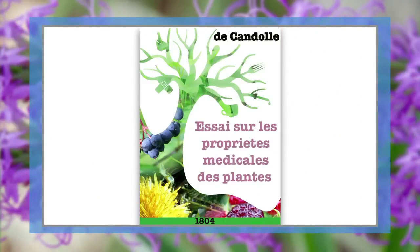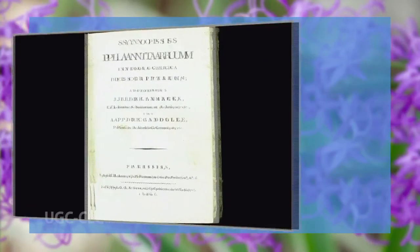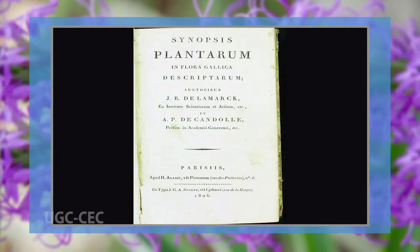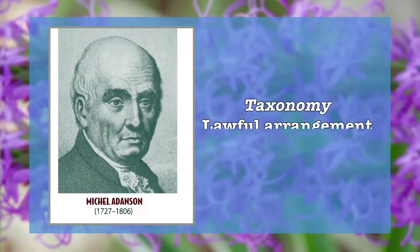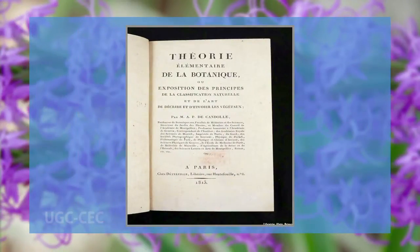In 1804, De Candolle published his Essai sur les Propriétés Médicales des Plantes and was granted a Doctor of Medicine degree by the Medical Faculty of Paris. Two years later, he published Synopsis Plantarum in Flora Gallica Descriptarum. He coined the term taxonomy for the first time, meaning the lawful arrangement of plants. His classical works include the book Théorie Élémentaire de la Botanique, published in 1813, in which he projected a morphological approach to classification. This also referred to the principles governing classification.